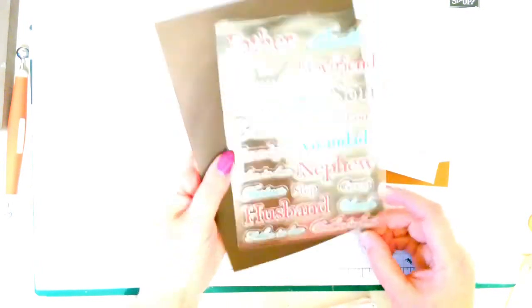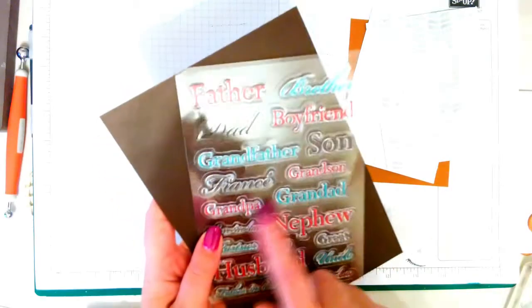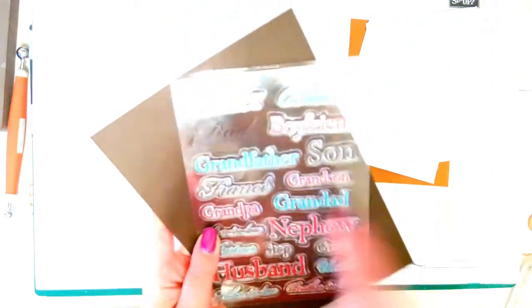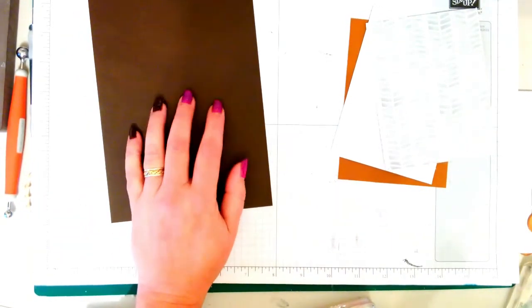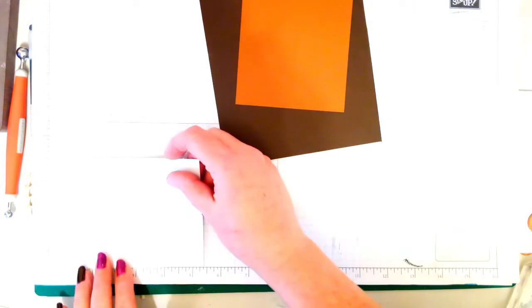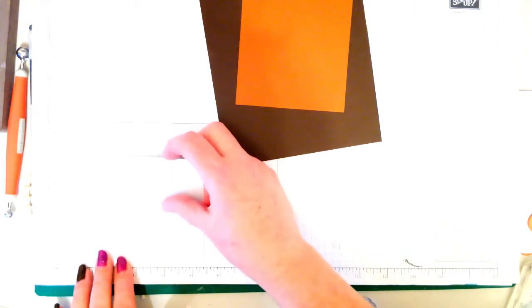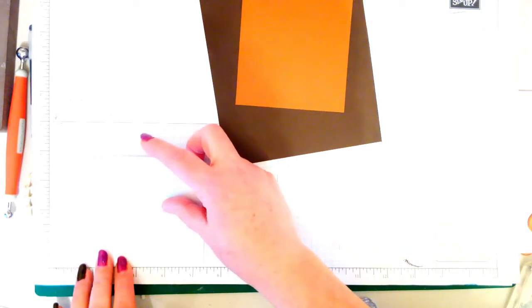You will need card bases three and five eighths by eight and a quarter scored at four and an eighth, a piece of card stock three and seven eighths by five and five eighths, and this is five and three eighths by three and seven eighths, plus some DSP.